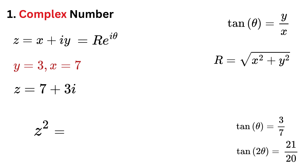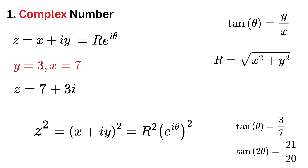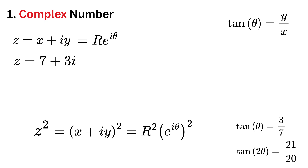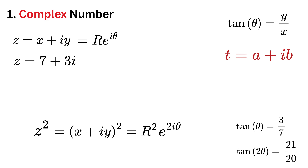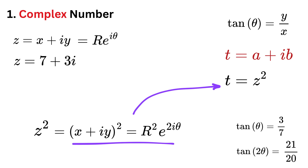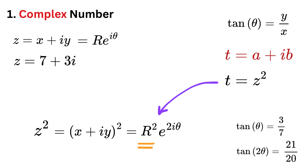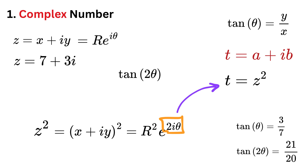This is because z squared equals (x plus i·y) whole squared, and we can also write it as (r times e raised to i·theta) whole squared, or r squared times e raised to i·2·theta. Suppose t equals a plus i·b is some other complex number such that t equals z squared. So t will also equal r squared times e raised to 2i·theta, meaning the magnitude of t is r squared and its argument is equal to 2 times theta. So tan of 2 theta equals b over a.